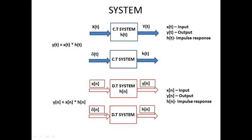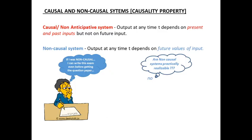Proceeding on, we are going to discuss about the various properties that can be applied to a system. The first property under consideration is the causality property, and systems are classified as causal and non-causal. What is called a causal system?